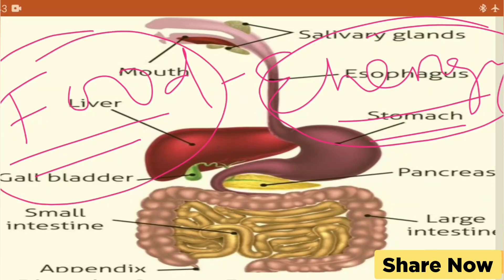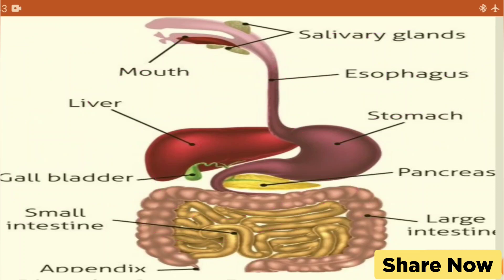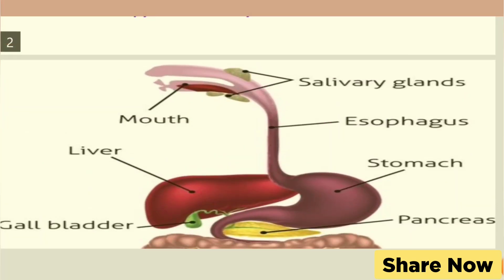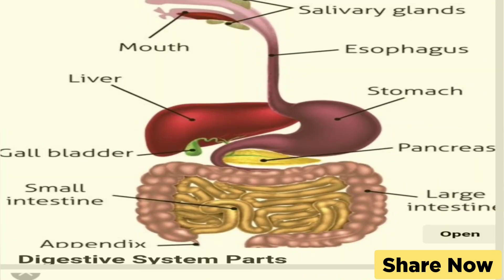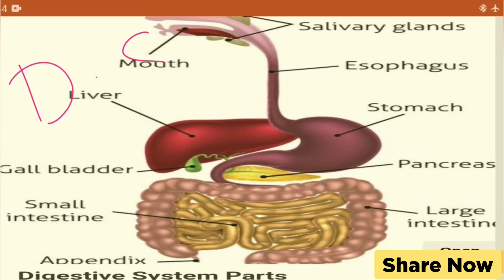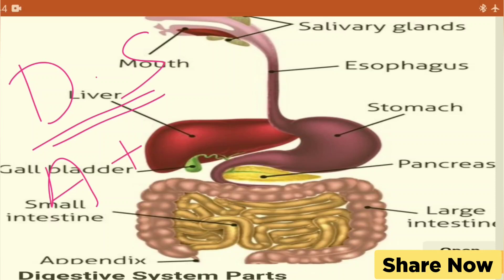The digestive system is called the digestive system. The alimentary canal plus the digestive gland is called the digestive system. If you have a simpler way to understand the food...